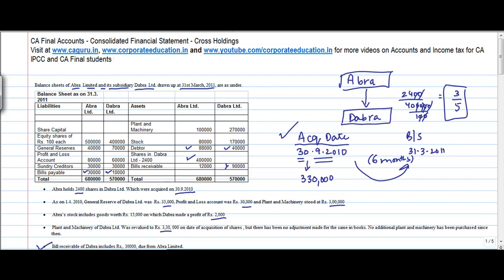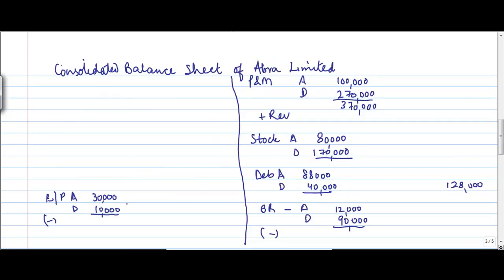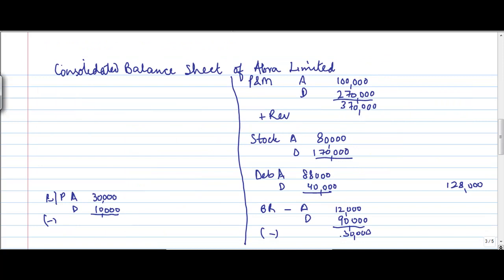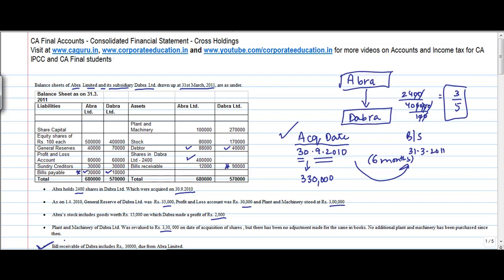Bill receivable of Dabra Limited includes 30,000 due from Abra Limited. So bill receivable of this company includes 30,000 which is due from Abra Limited which is reflected here. So what is the entry that you make? Because these are intercompany balances, you will knock them off. 30,000 is the amount. So I will reduce 30,000 from here and I will reduce 30,000 from here. You write this as intercompany, so 12 plus 90 minus 30. This will give you 72,000. 30 plus 10 minus 30, this is simple, 10,000. And with this, my adjustment is done.